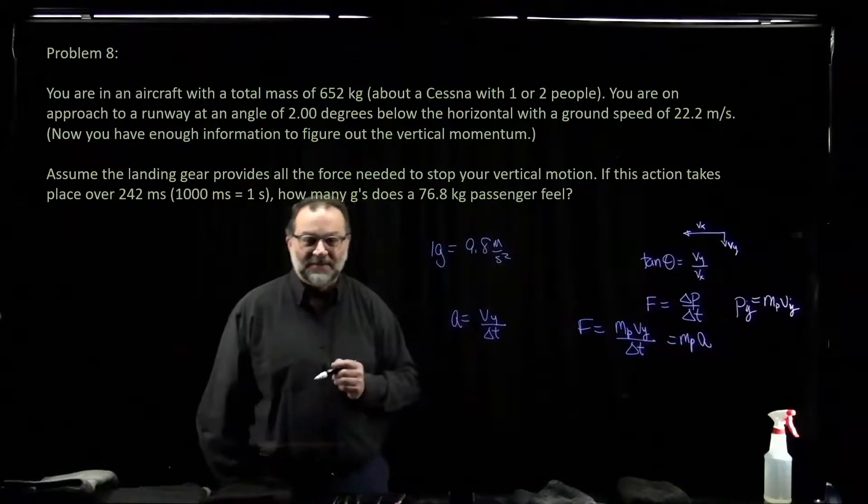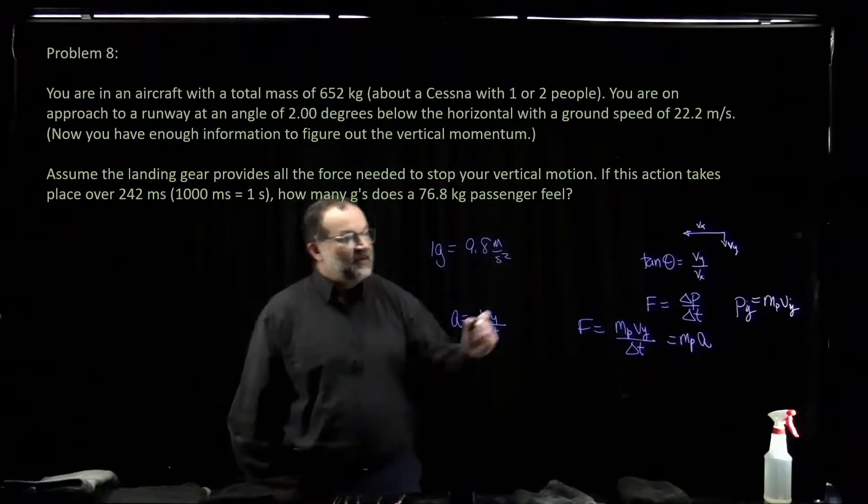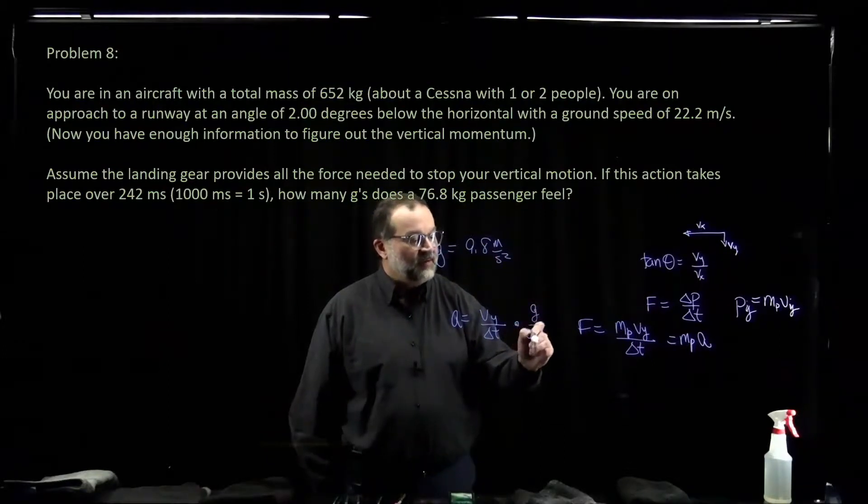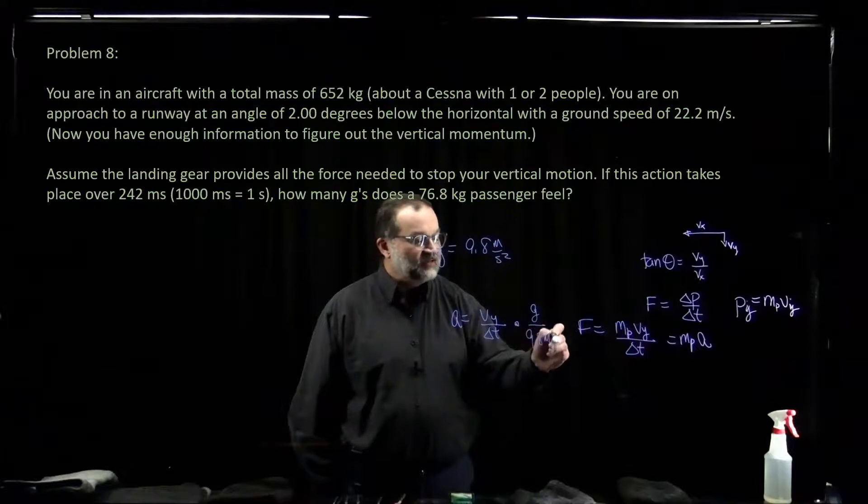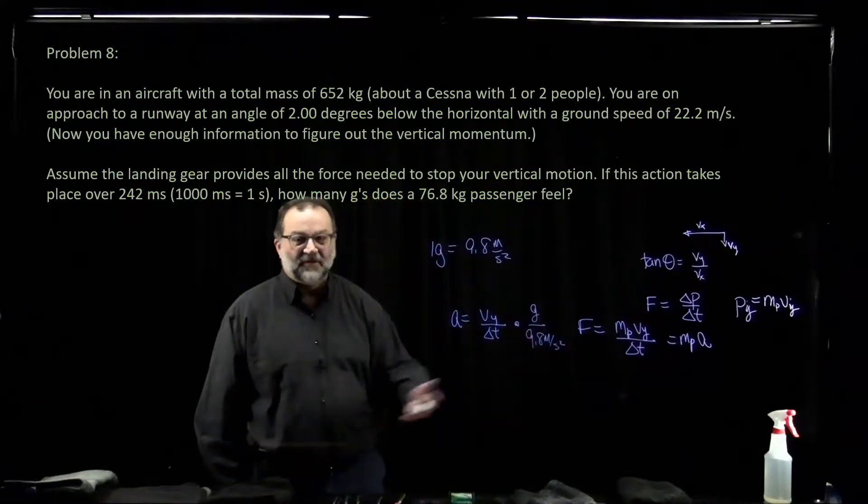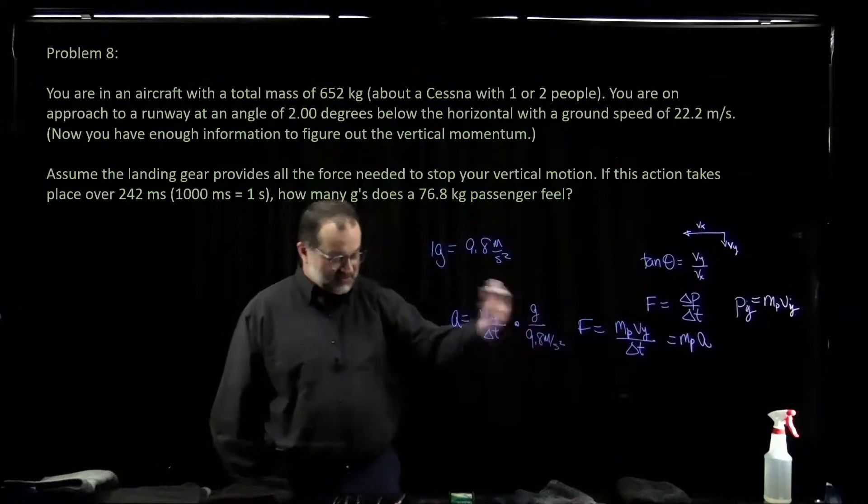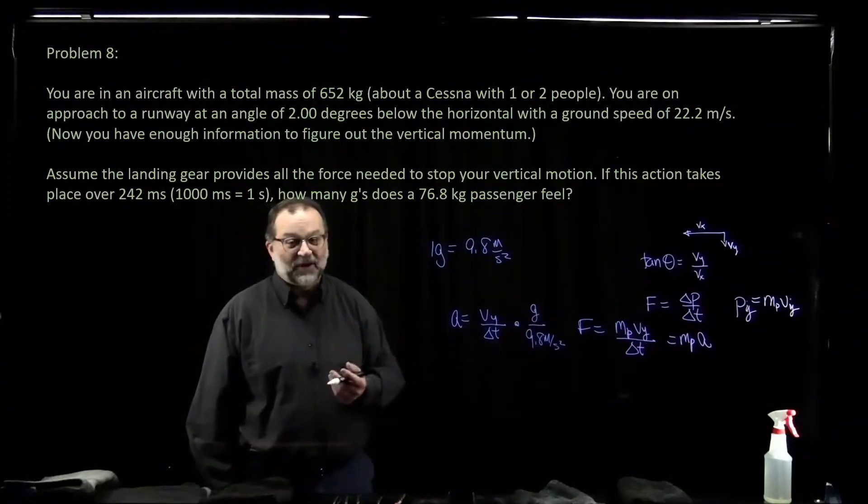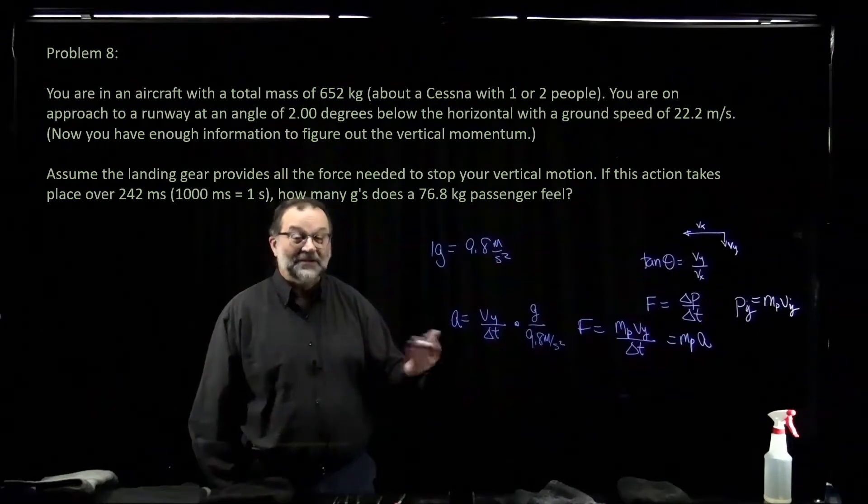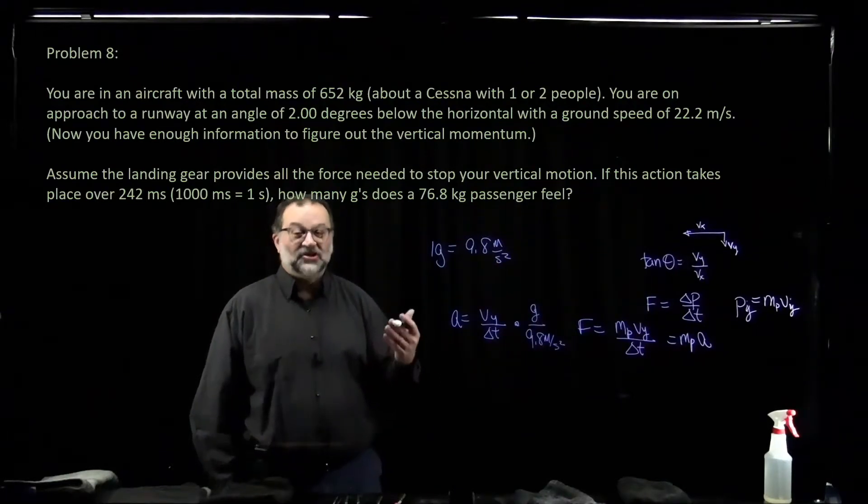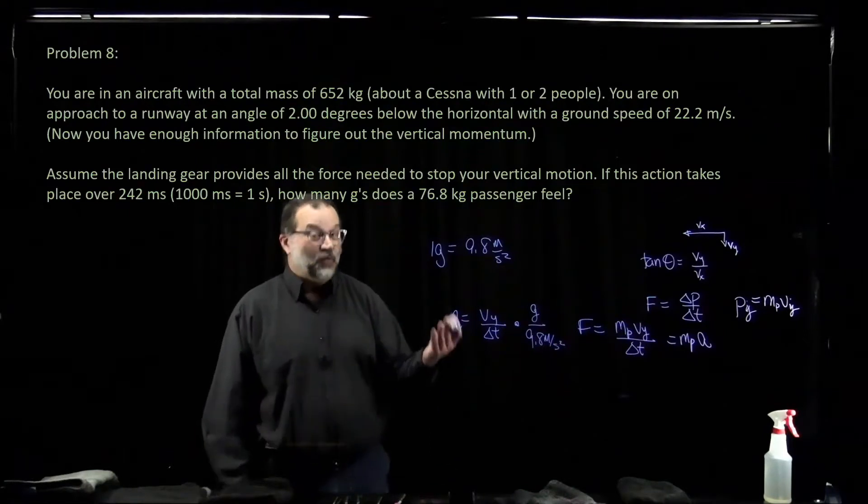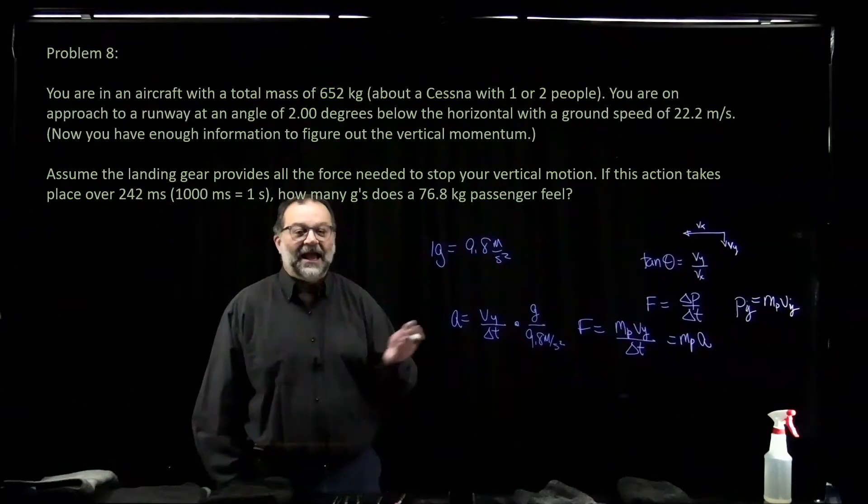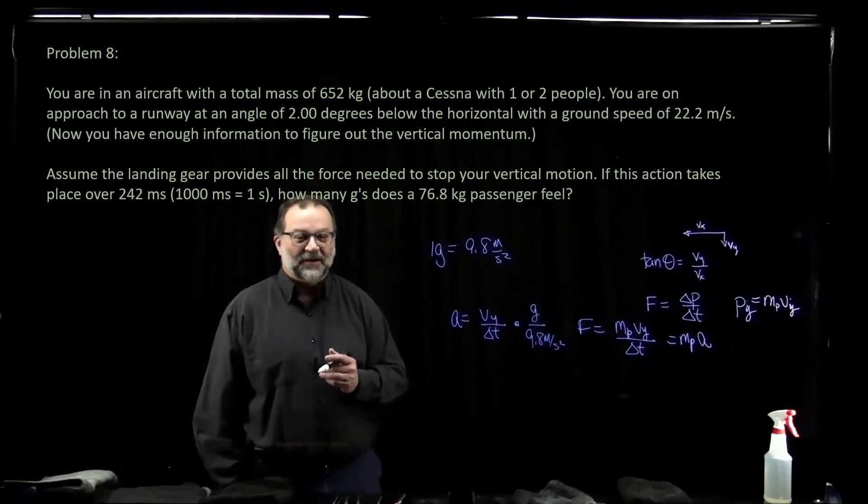This acceleration is going to be in meters per second squared. And so we need to multiply by a g over 9.8 meters per second squared to convert from meters per second squared to g's. This is going to give us how many g's we have that we're experiencing in this problem. And so that gives you an idea of, in terms of a fraction of what you normally feel, which is 1g, what does this landing add to it? And that's it for problem eight.